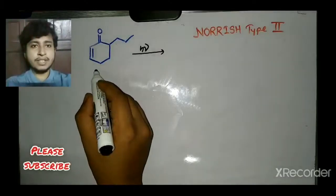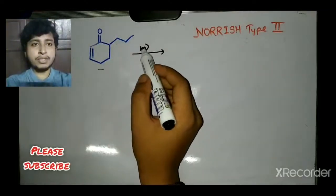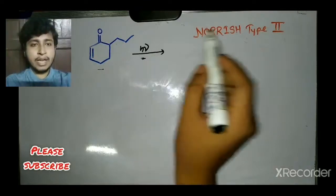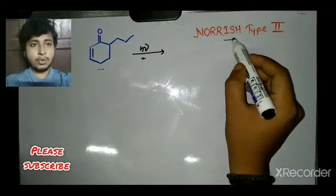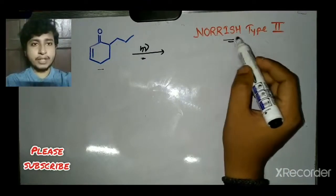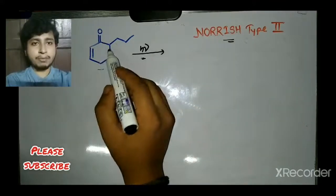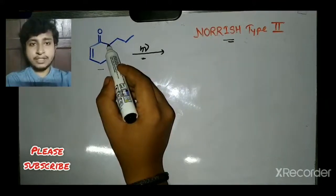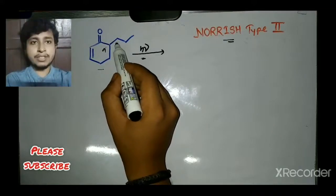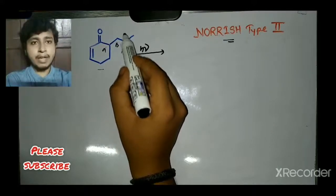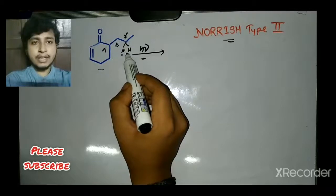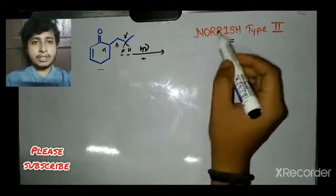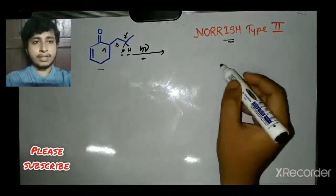The starting material is treated with hν condition, making this a photochemical reaction known as the Norrish Type 2 reaction. It is called Norrish Type 2 because in the starting material we can identify the alpha carbon, the beta carbon, and the gamma carbon, and gamma hydrogens are present — these gamma hydrogens will take part in this reaction.